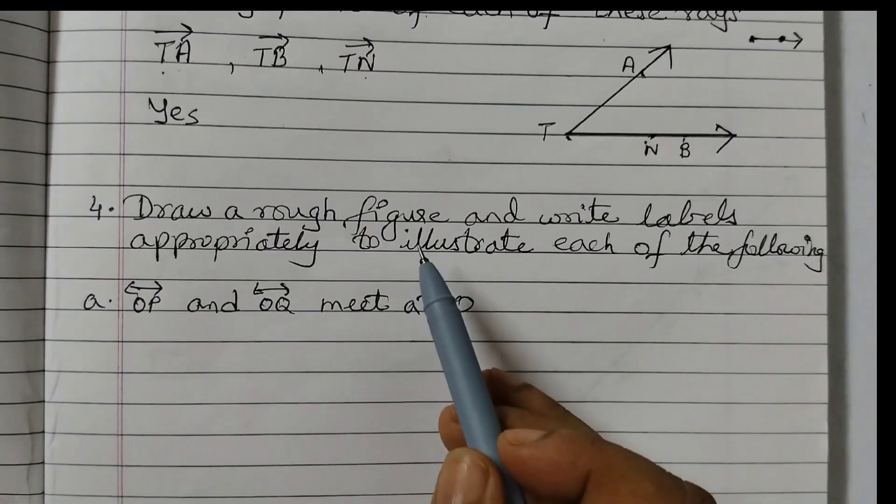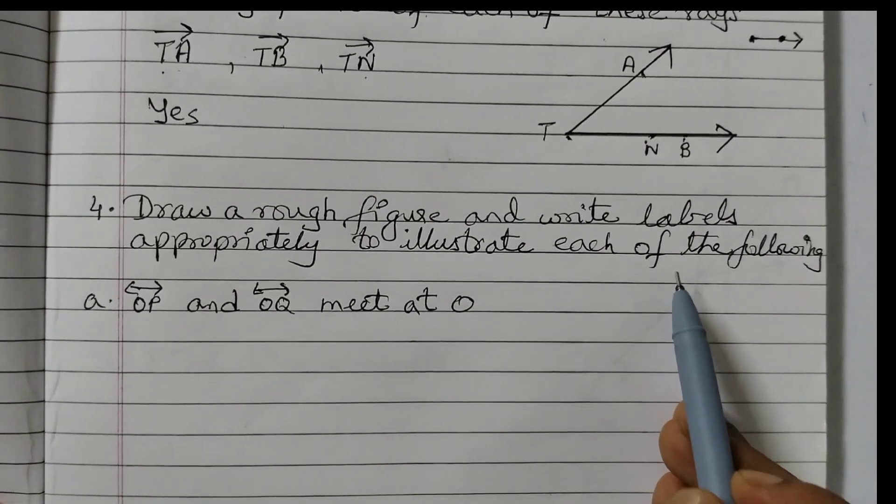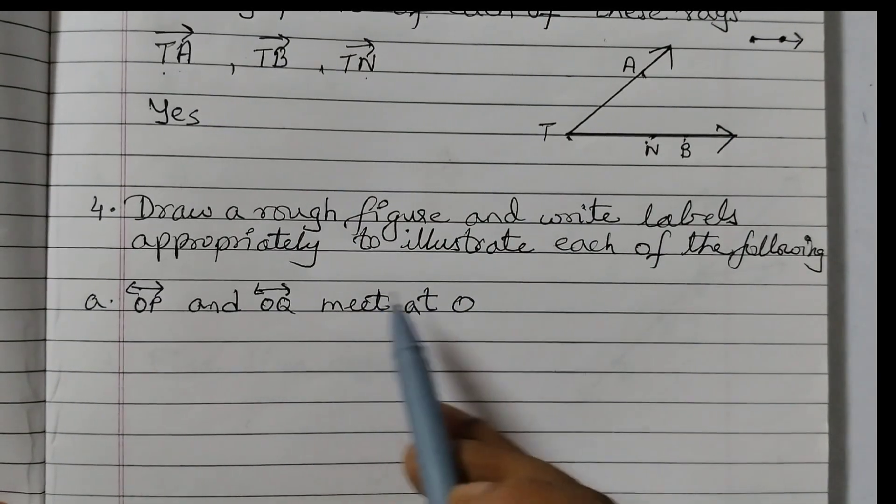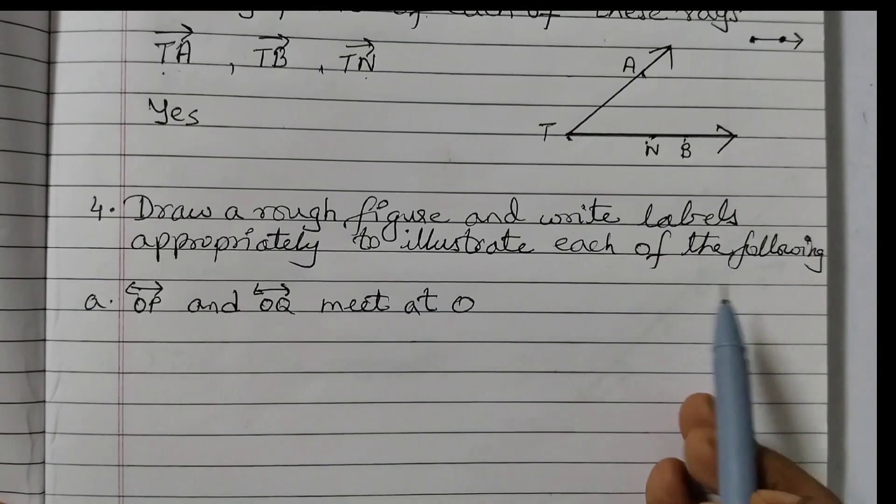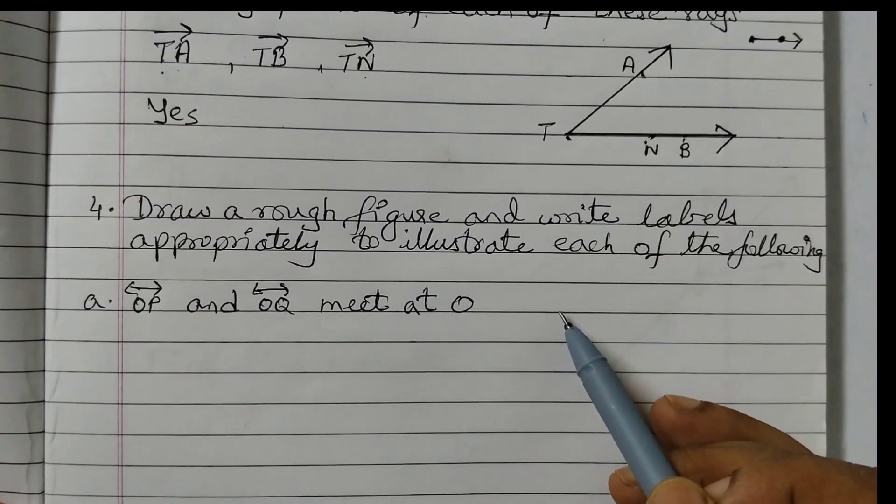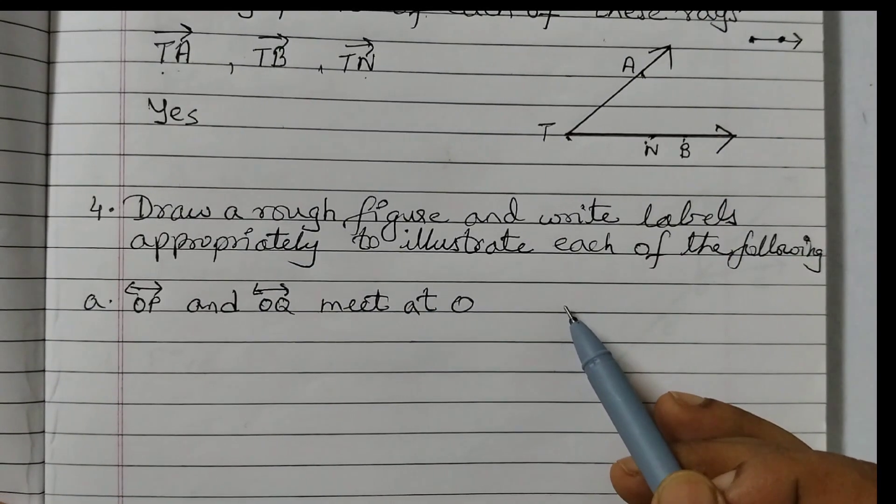Question number 4 is draw a rough figure and write labels appropriately to illustrate each of the following. We need to draw a rough figure and label it to show each of the following.